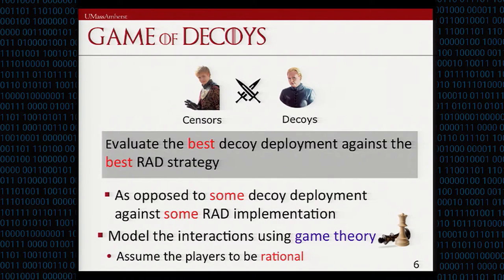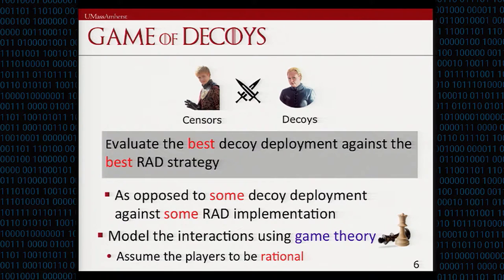We designed an analysis which we call the Game of Decoys. The goal is to evaluate the best strategy of the decoy routers against the best strategy of routing-around-decoy-capable censoring adversaries. Unlike previous work that evaluates specific deployments, we are trying to evaluate the optimal strategies of each player. The right tool for this kind of analysis is game theory. We use game theory and assume that each of the players are rational, which is a fair assumption given what we see in the real world. We then use game-theoretic analysis to see who is winning.